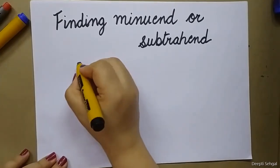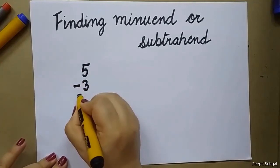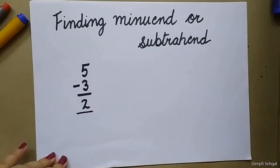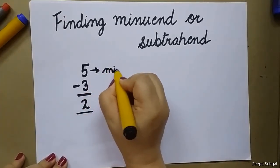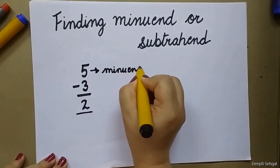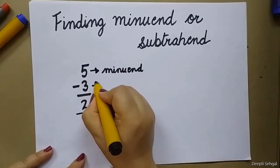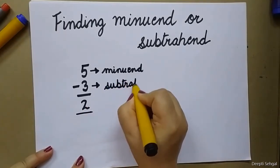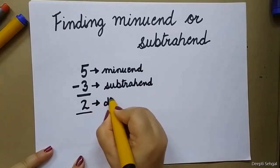So if I am doing subtraction, I am writing here 5 minus 3 will give you the answer 2. So what is minuend? 5 is my minuend — the number from which I am subtracting is my minuend. Then 3 is my subtrahend and 2 is my difference.